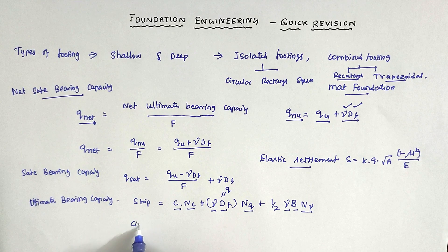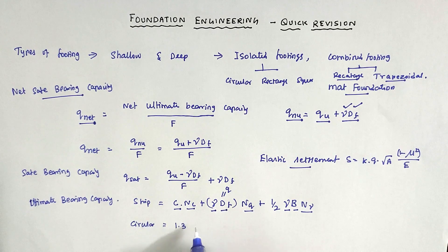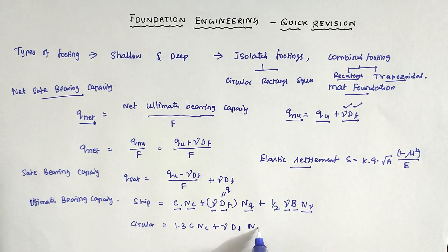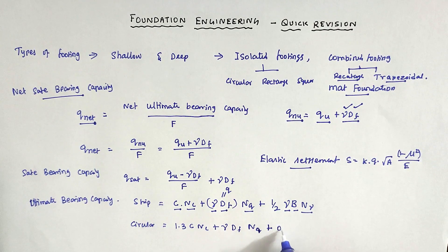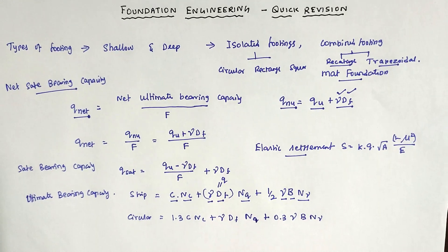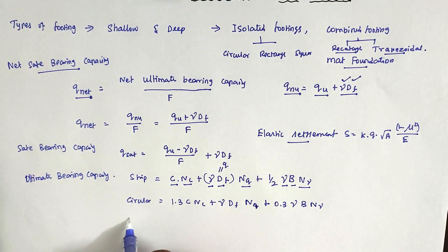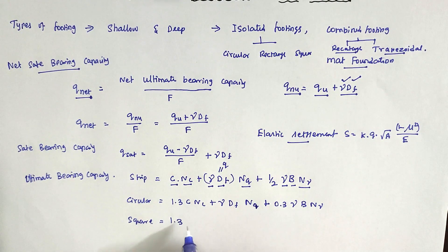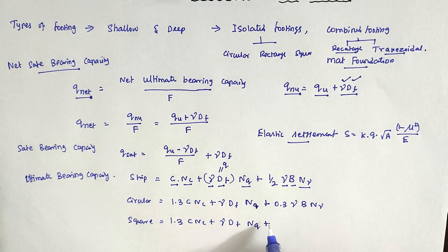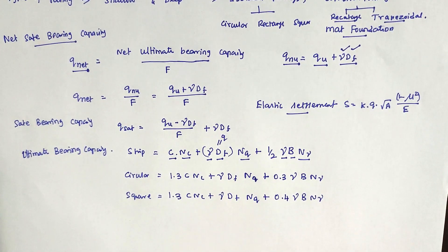For circular footing, the formula is: Q_U = 1.3·C·N_C + gamma·D_F·N_Q + 0.3·gamma·B·N_gamma. For square footing, the formula is: Q_U = 1.3·C·N_C + gamma·D_F·N_Q + 0.4·gamma·B·N_gamma.